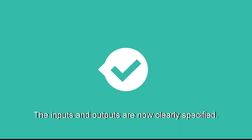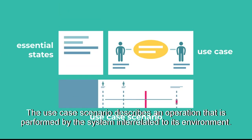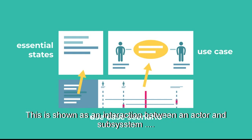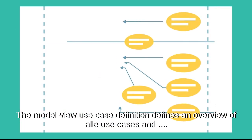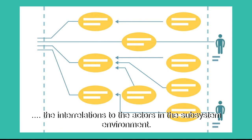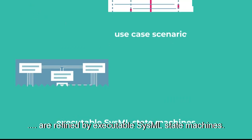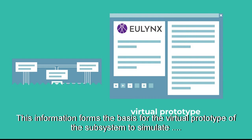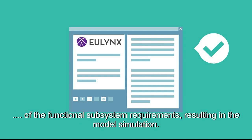The inputs and outputs are now clearly specified. A use case may be defined by one or more use case scenarios. The use case scenario describes an operation that is performed by the system interrelated to its environment. This is shown as an interaction between an actor and subsystem whereby defined essential states of the subsystem are used as preconditions. The model view use case definition defines an overview of all use cases and the interrelation to the actors in the subsystem environment. Both the model type essential states of the subsystem and the use case scenarios are refined by executable SysML state machines. This information forms the basis for the virtual prototype of the subsystem to simulate the stimuli and the response behaviour of the system.